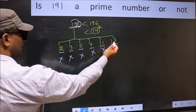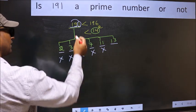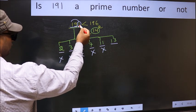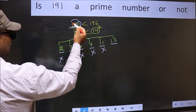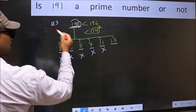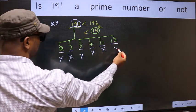Next, number 13. To check divisibility by 13, last digit you do into 4. So 1 into 4 is 4. Add to this 19. 19 plus 4 equals 23. 23 is not divisible by 13, so this number is also not divisible by 13.